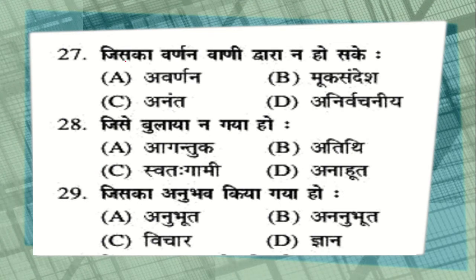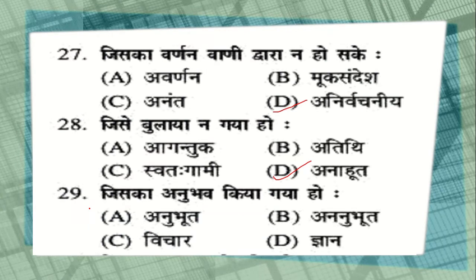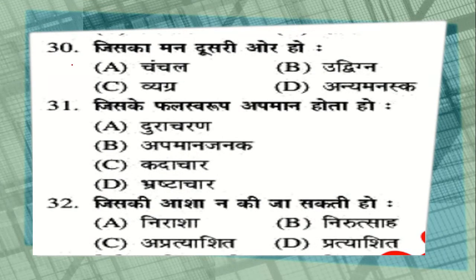Question number 27: जिसका वर्णन वाणी द्वारा न हो सके — options: अवर्णन, मूक संदेश, अनन्त, या अनिर्वचनीय. The correct answer is option D, अनिर्वचनीय. Question number 28: जिसे बुलाया न गया हो — options: आगंतुक, अतिथि, स्वतः गामी, या अनाहूत. The correct answer is अनाहूत. Question number 29: जिसका अनुभव किया गया हो — options: अनुभूत, विचार, या ज्ञान. The correct answer is अनुभूत. Question number 30: जिसका मन दूसरी ओर हो — options: चंचल, उद्विग्न, व्यग्र, या अन्यमनस्क. The correct answer is option D, अन्यमनस्क.